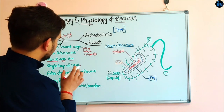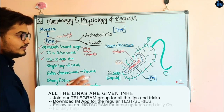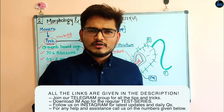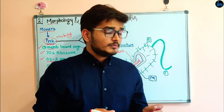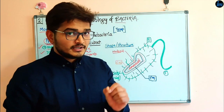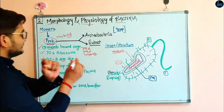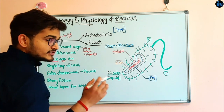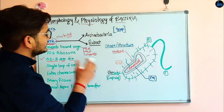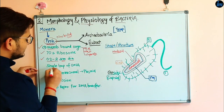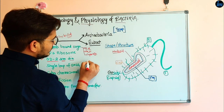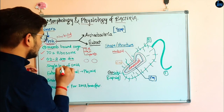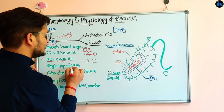The 70S ribosome is actually a structural unit — it tells us how ribosomes are found inside the cell. Regarding the single loop of DNA: a loop simply means like this — a circular form. DNA, deoxyribonucleic acid, is double-stranded, so it forms a circular loop.